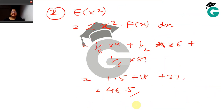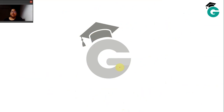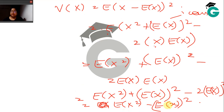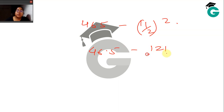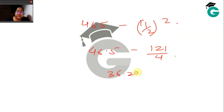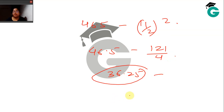We know E[X²] = 46.5 and E[X] = 11/2. So the variance equals 46.5 − (11/2)² = 46.5 − 121/4. That gives 46.5 − 30.25 = 36.25 as the variance of X.